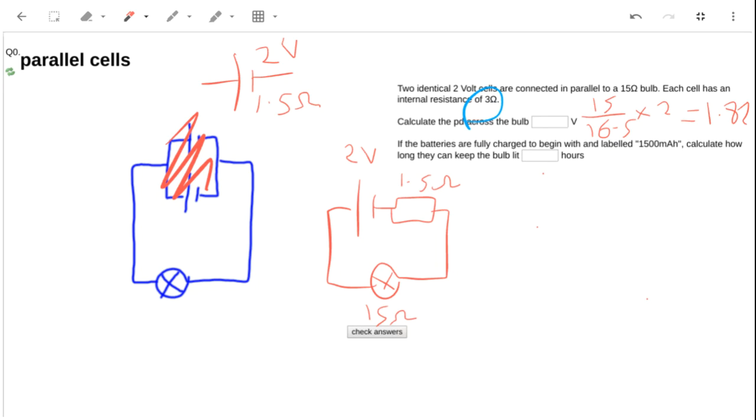And we need the current here because something about milliamps, what does that 1500 milliamps mean? It means the battery can provide 1.5 amps for one hour, so 1500 milliamp hours or 1.5 amp hours, 1.5 amps for one hour.